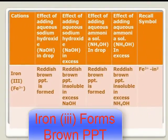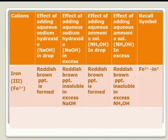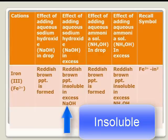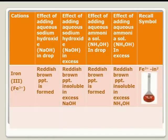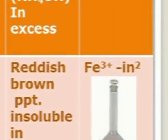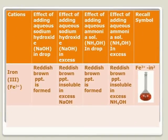Iron(III), Fe3+, forms a reddish-brown precipitate in both sodium hydroxide and ammonium hydroxide solution. It is also insoluble in excess sodium hydroxide and insoluble in excess ammonium hydroxide. The color of iron(III) precipitate is reddish-brown — just like the color of rusted iron. One of the best ways to remember this is to think of the color of rusted iron. The recall symbol is Fe3+ IN².